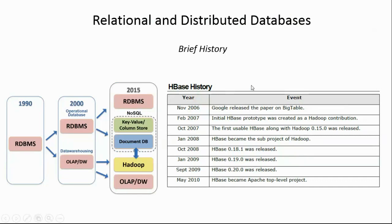Here is a little bit of history on relational and distributed databases. Relational databases predate distributed databases. From the 90s we had RDBMS in different varieties. In around 2000, a clear distinction was made between operational databases that are essentially transactional and OLAP, which is for data warehousing and analytics, because people figured out that the constraints of a transactional system were not conducive for doing large volume analytics.